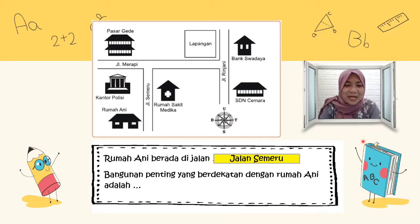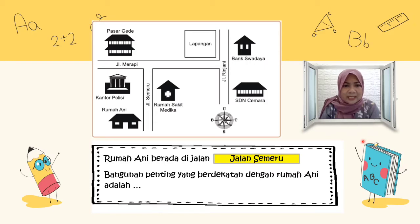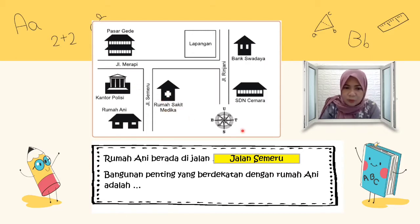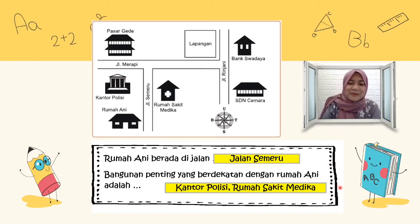Yang pertanyaan kedua: bangunan penting yang berdekatan dengan rumah Ani, ada bangunan apa ya? Sepertinya ada kantor polisi, atau rumah sakit, atau pasar ya? Oh, ini rumah Ani yang berdekatan, yang paling dekat — sepertinya rumah sakit. Kantor polisi mungkin juga bisa. Yuk kita buktikan jawabannya: kantor polisi dan rumah sakit medika. Anak-anak bisa membacanya pelan-pelan ya. Cukup mudah anak-anak.